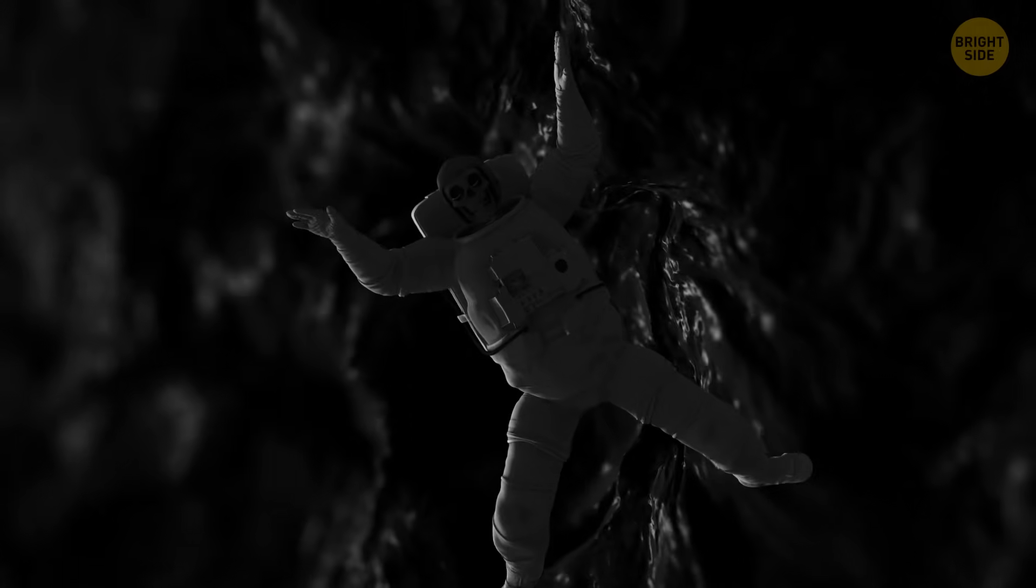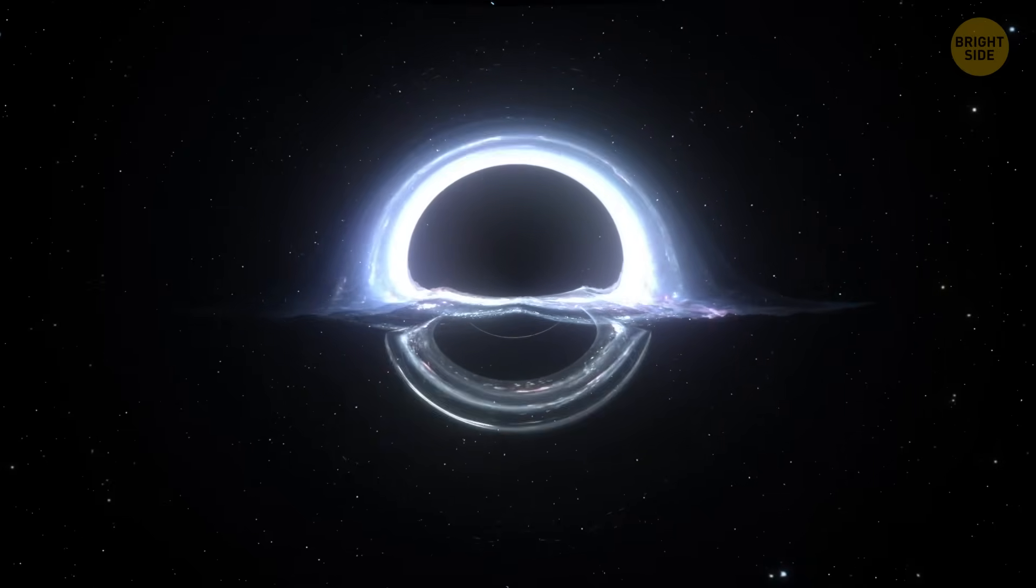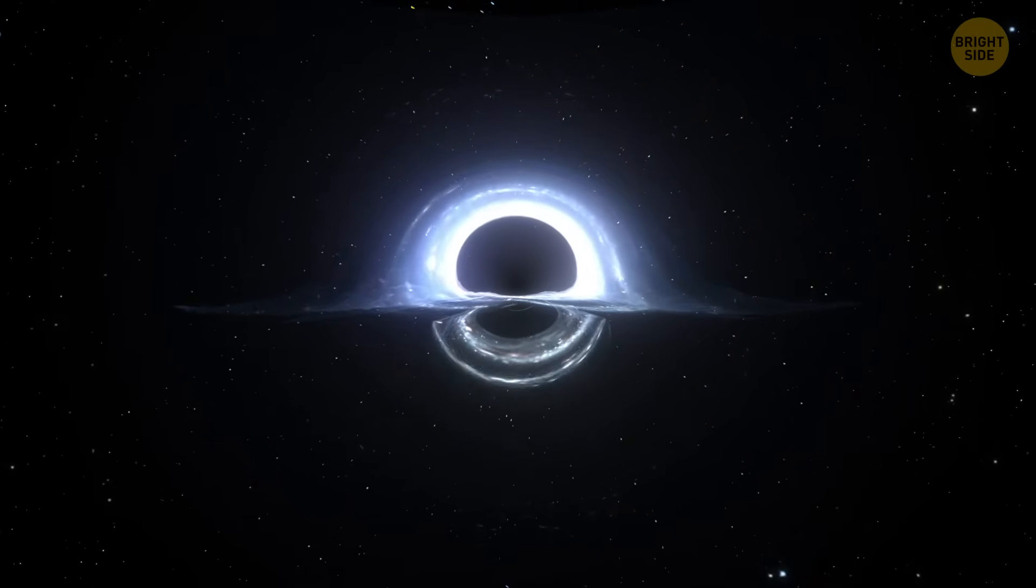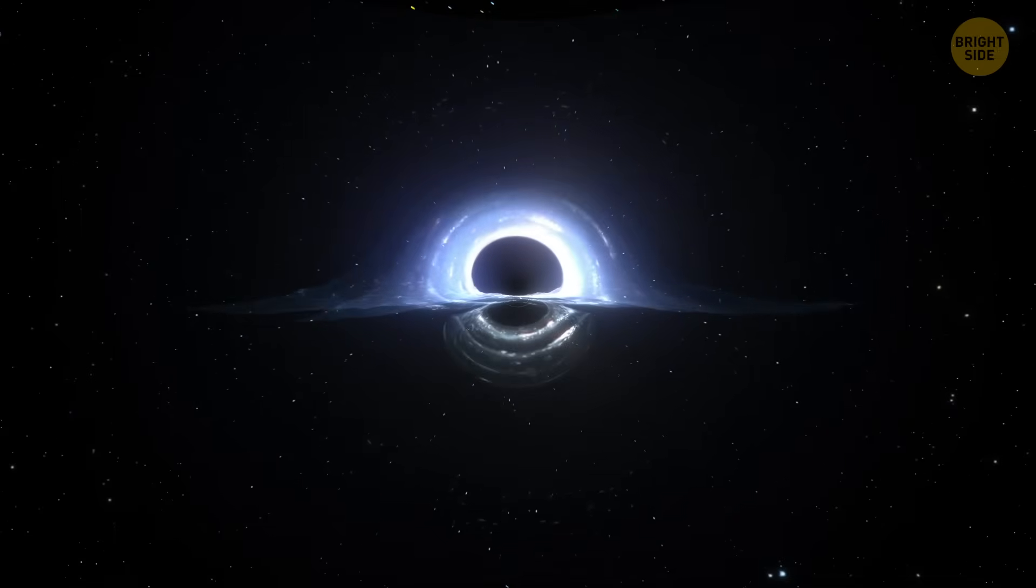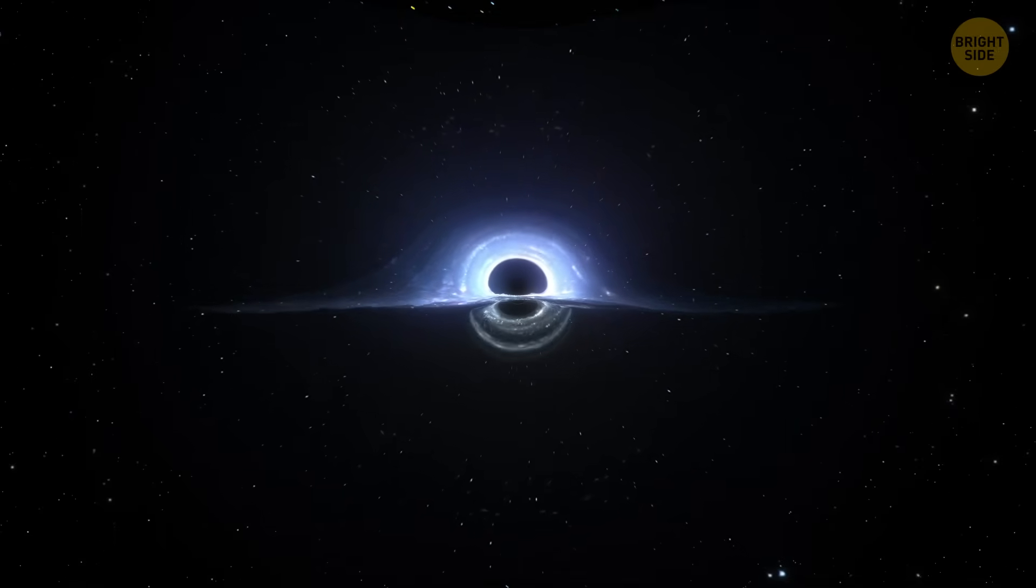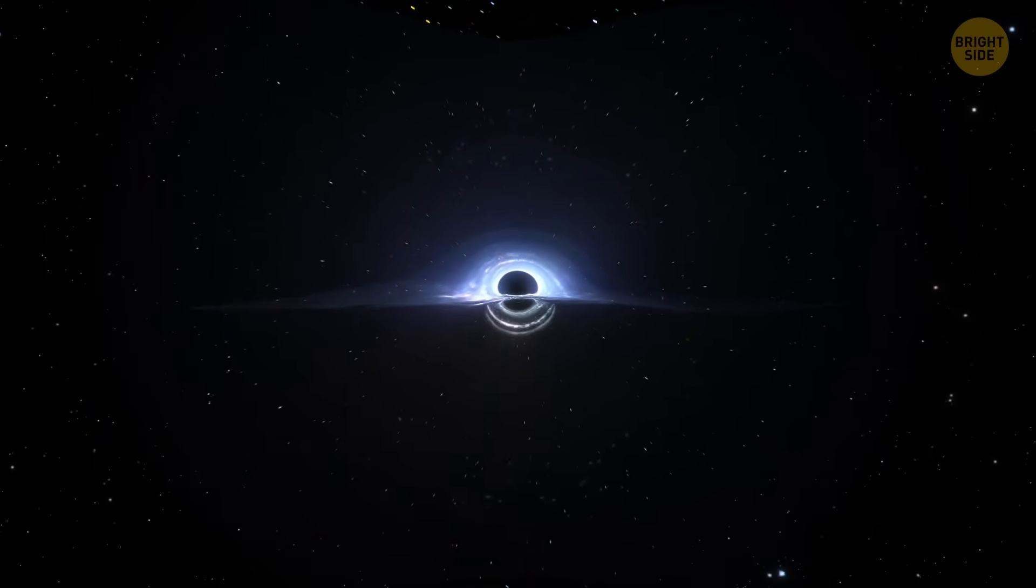Over insanely long times, way beyond any human timescale, they slowly shrink. They emit a kind of hot radiation, now called Hawking radiation, and lose mass little by little. Eventually, a black hole becomes tiny. But what happens next? That part is still a total mystery.